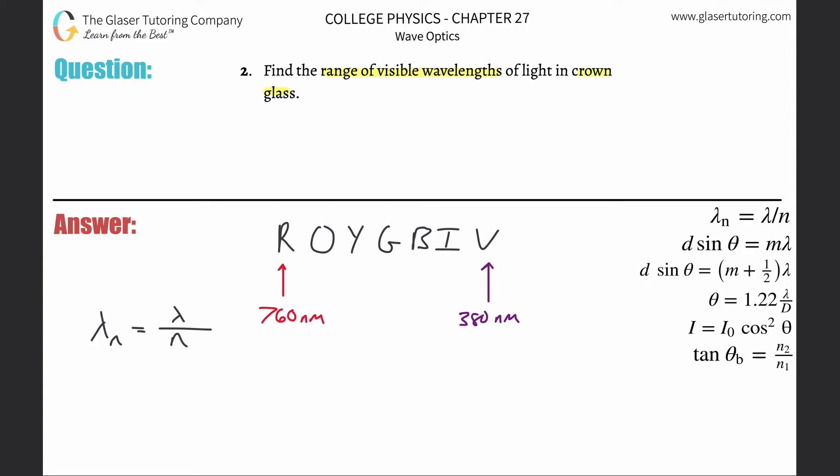To find the wavelength in crown glass, we need the wavelength in a vacuum for red light, and then divide it by the index of refraction, 1.52 for crown glass, which is looked up on a table.